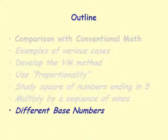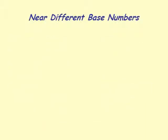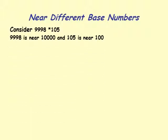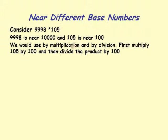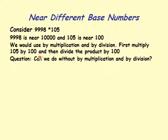The next section covers multiplication near different base numbers — where the multiplicand and multiplier are close to two different base numbers. Example: 9998 times 105. Here 105 is close to base 100 and 9998 is close to base 10,000. The approach is to multiply 105 by 100, perform the base multiplication, then divide the product by 100 at the end.